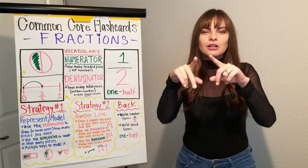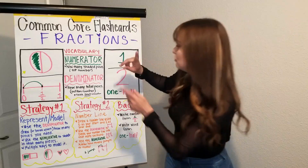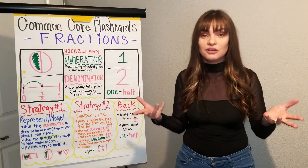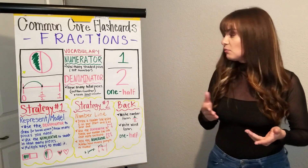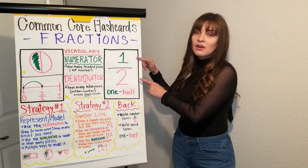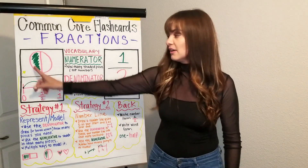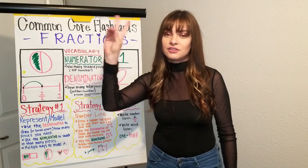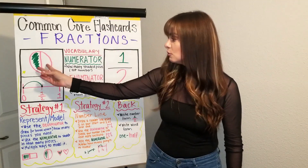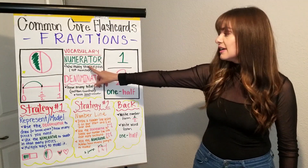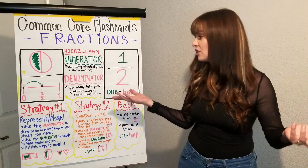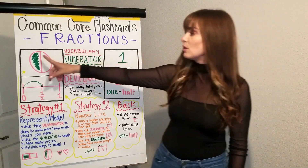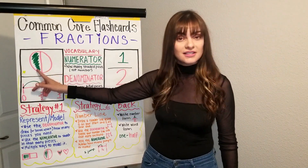Let me go back over a little bit slower. The numerator is how many shaded pieces or how many pieces are left over that you have. So for instance, if we're working with the number one half, then we have cut our object or our circle into two pieces. The numerator is telling us how many do I have left, how much are shaded. We look to our top number — it says we have one — so we would color in, or there would be one side shaded.